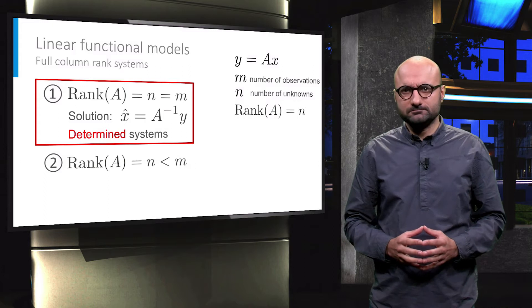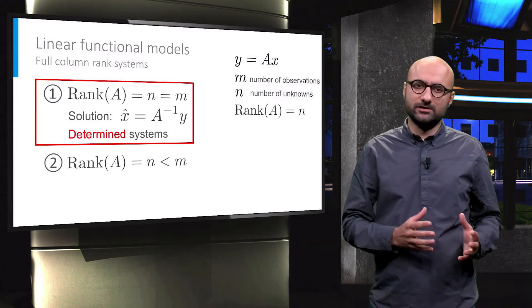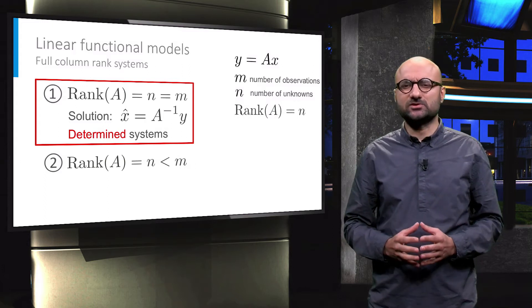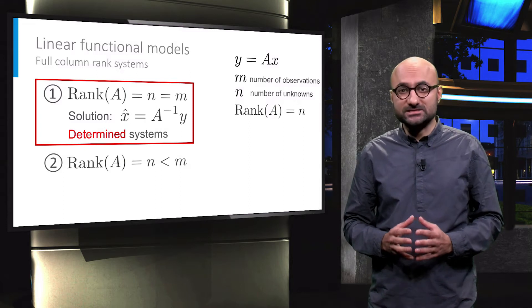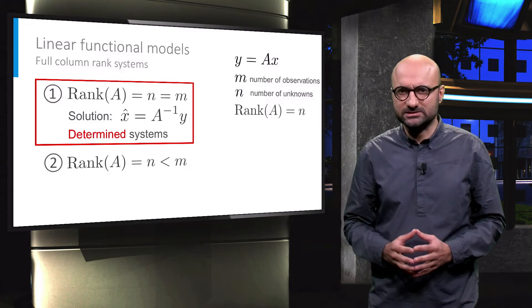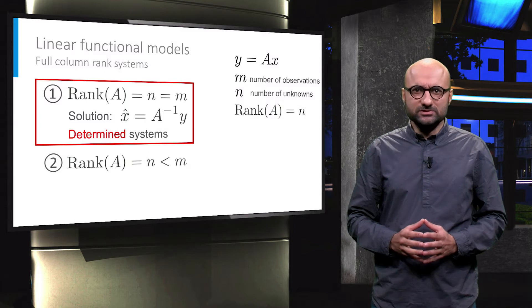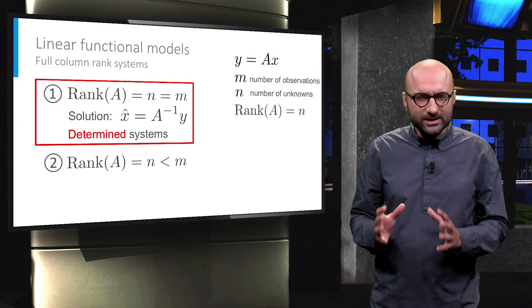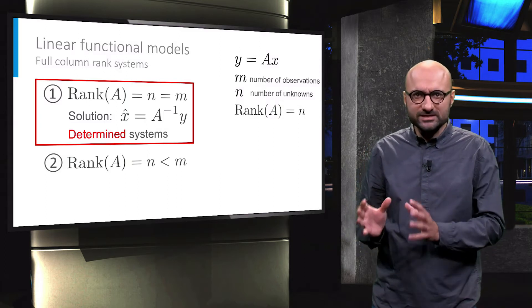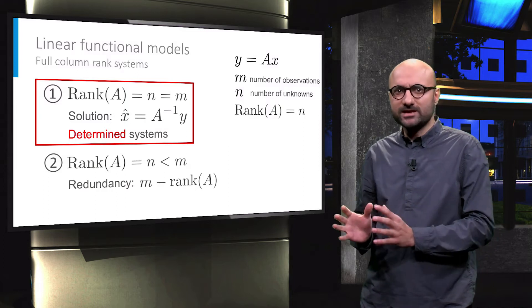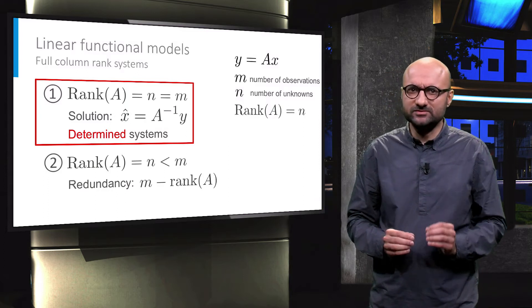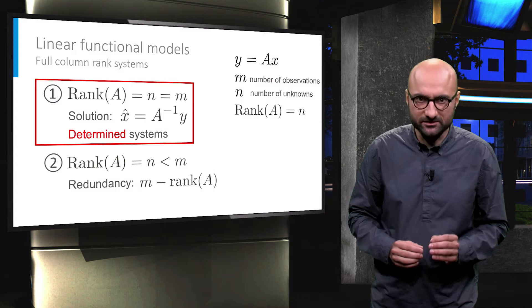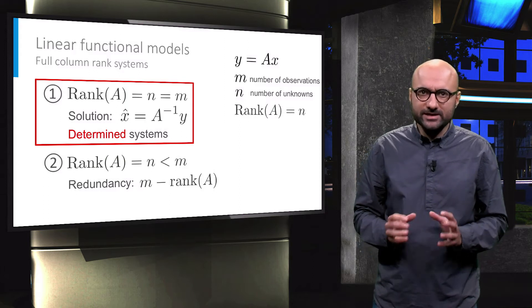The second scenario, however, is more complicated. We have more observations than unknowns and the consistency is not guaranteed as the rank is smaller than the number of observations. Here I want to introduce a new and important quantity: the number of observations m minus the rank of A results in a quantity which is called redundancy of the system.